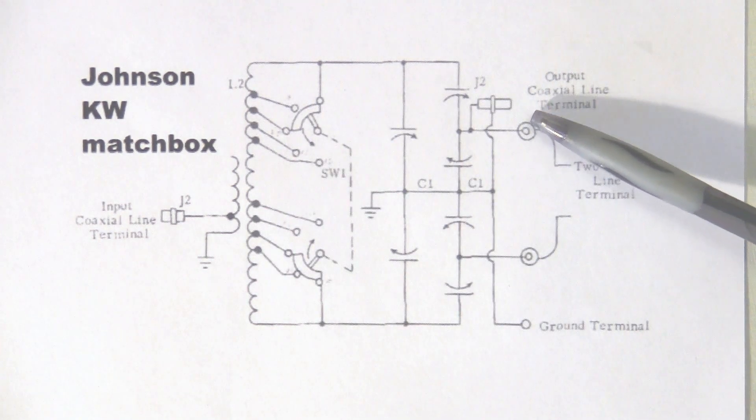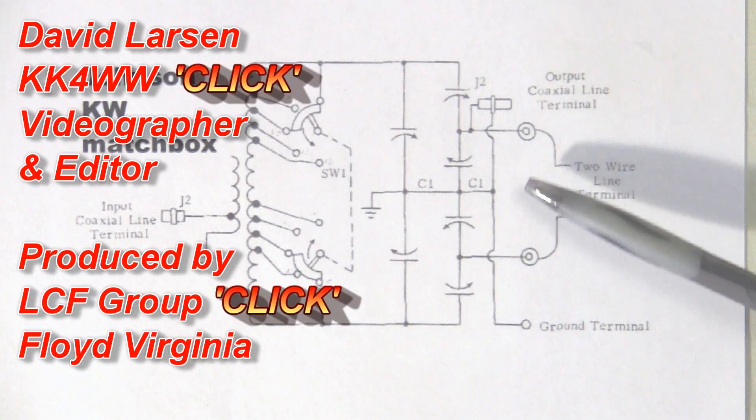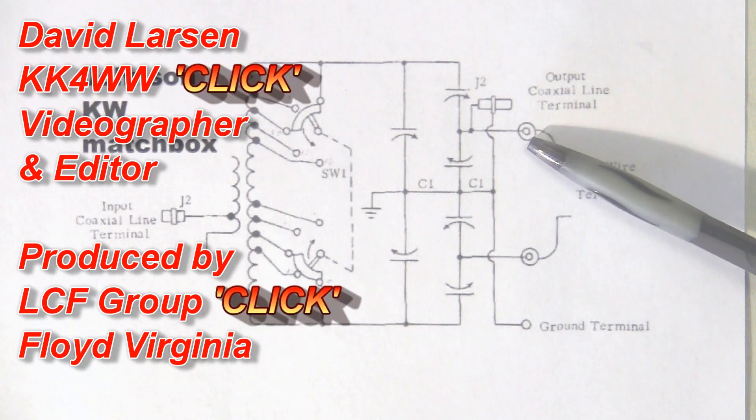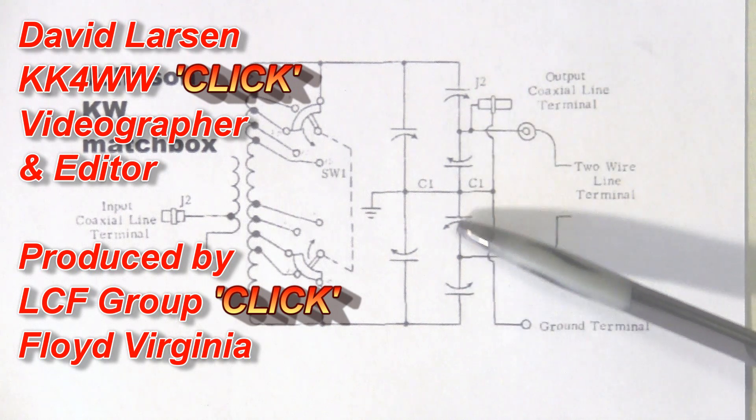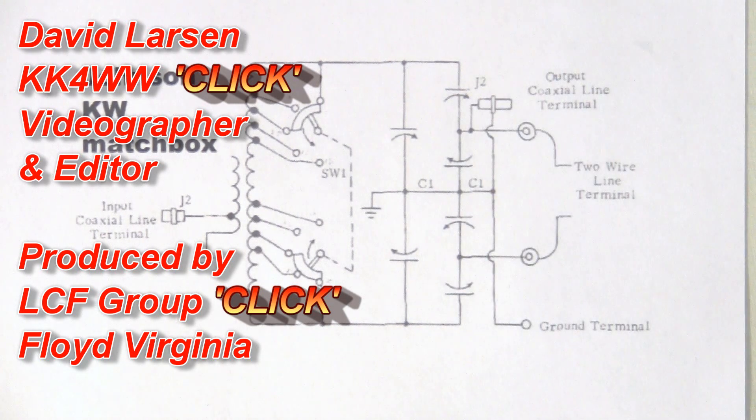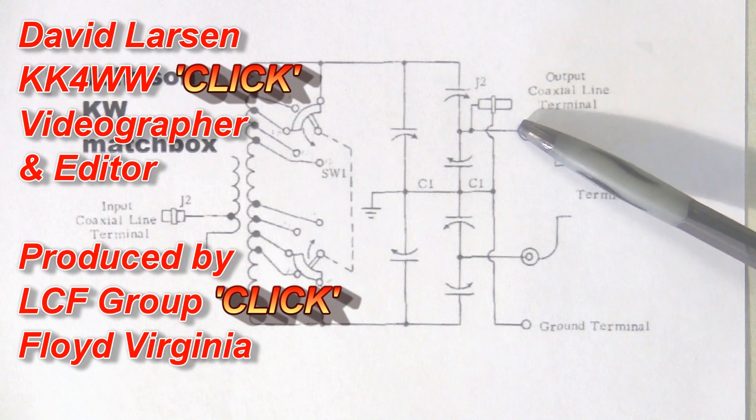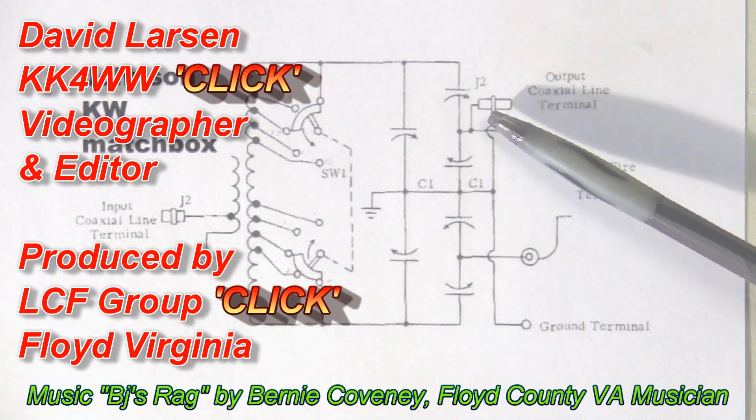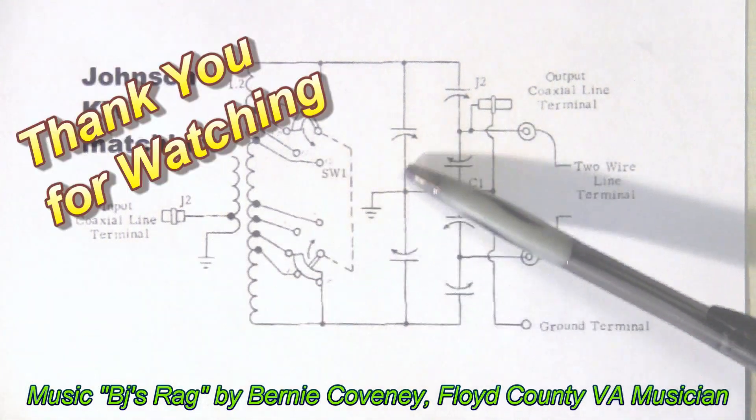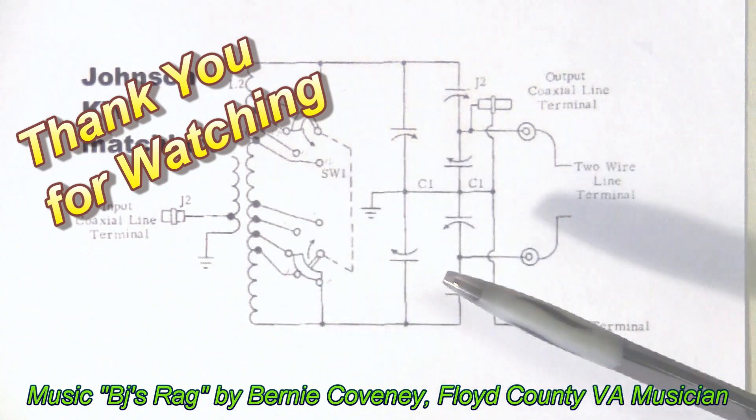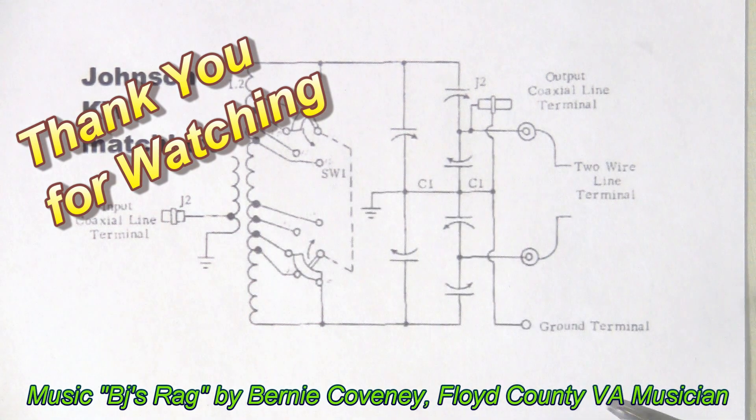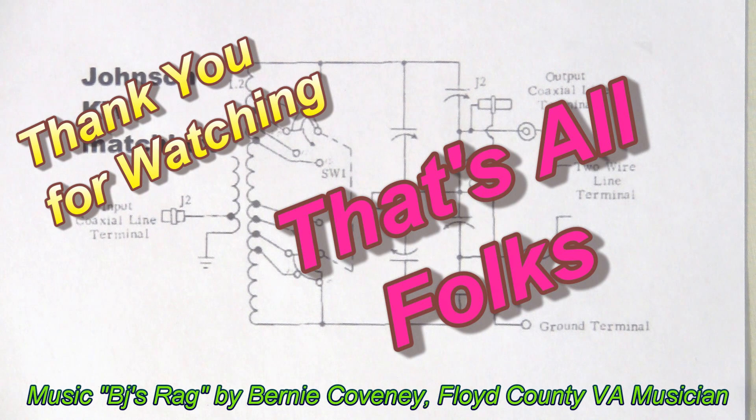The output can be either coaxial or two-wire twin lead. And these capacitors here essentially do the impedance matching for the output sort of in conjunction with the tuning is affected a bit here as well. So we can match quite a wide range of impedances with the Johnson Kilowatt Matchbox Tuner.